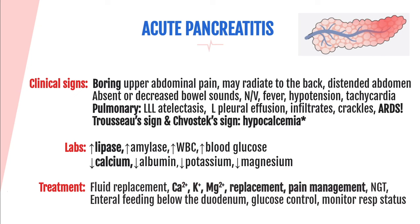There are two signs associated with acute pancreatitis due to low calcium levels: Trousseau's sign and Chvostek's sign. Trousseau's sign is a muscular hand or forearm spasm during inflation of the blood pressure cuff. Chvostek's sign is twitching of the facial muscles when tapping on the facial nerve. Both are signs of hypocalcemia. Lab findings include elevated lipase and amylase — two digestive enzymes found in the pancreas. Lipase stays elevated longer, making it a more trustworthy measure.